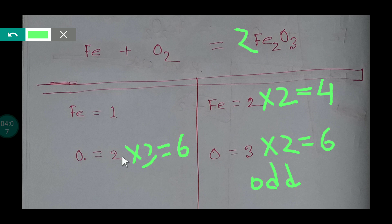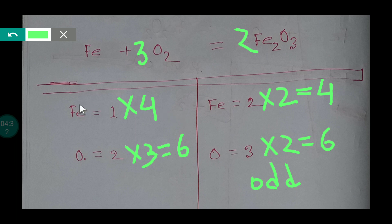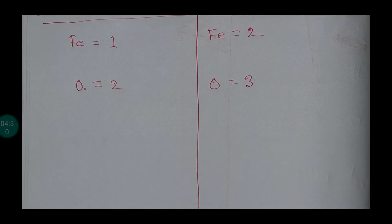To get 6 oxygen on the left from O₂, we multiply O₂ by 3, placing 3 in front of O₂. Now we have 4 iron on the left and 4 iron on the right, and 6 oxygen on the left and 6 oxygen on the right. So the balanced reaction is: 4Fe + 3O₂ → 2Fe₂O₃.